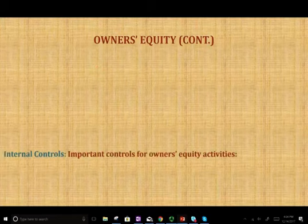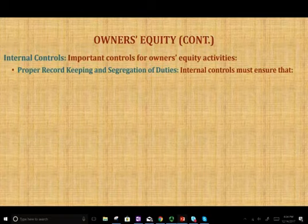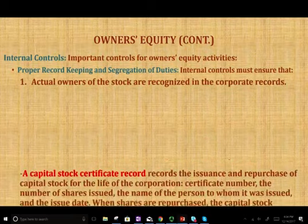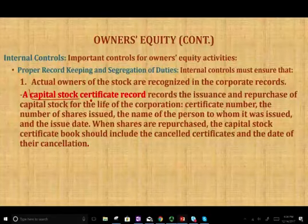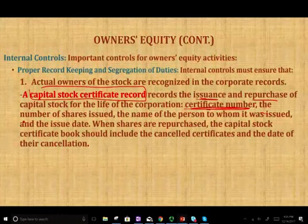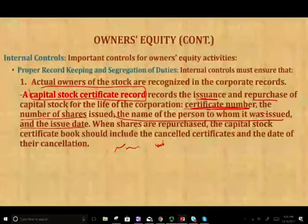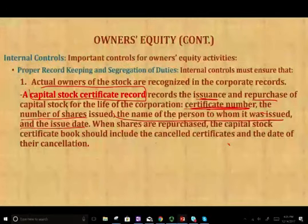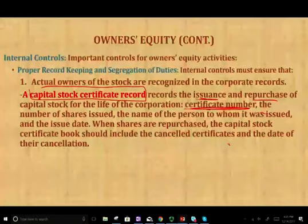Another important control for owner's equity is proper record keeping and segregation of duties. Internal control must ensure that actual owners of the stock are recognized in the corporate records. We should have a capital stock certificate record that records the issuance and repurchase of capital stock for the life of the corporation — including the certificate number, number of shares issued, the name of the person to whom it was issued, the issue date, addresses, social security, date of purchase, date of sale. When shares are repurchased, the capital stock certificate book should include the canceled certificate and the date of cancellation.